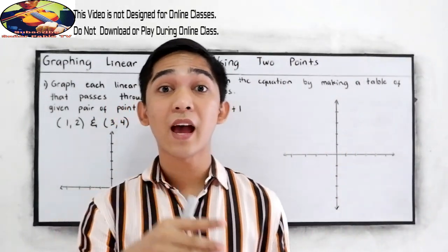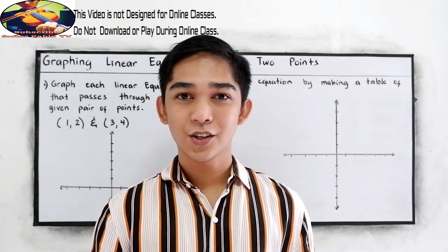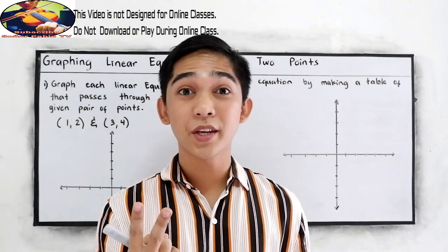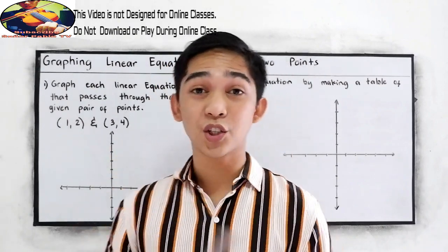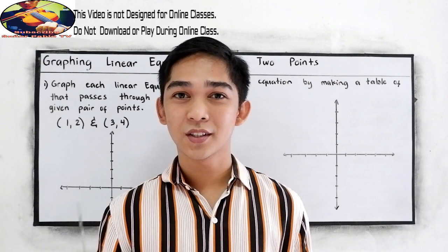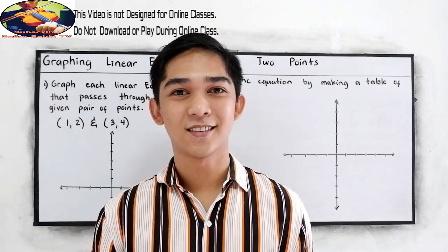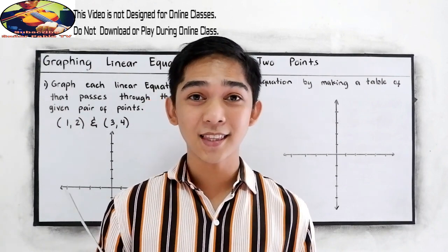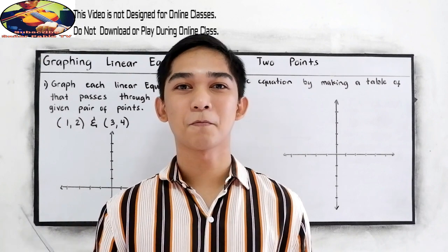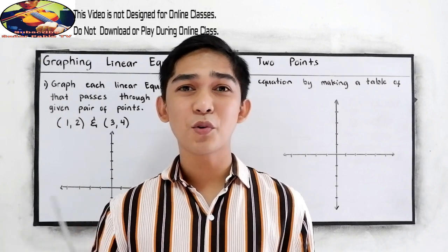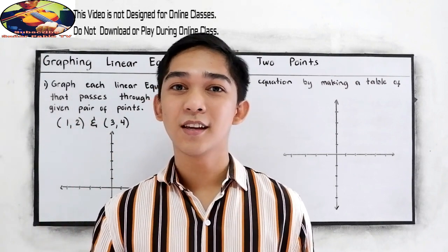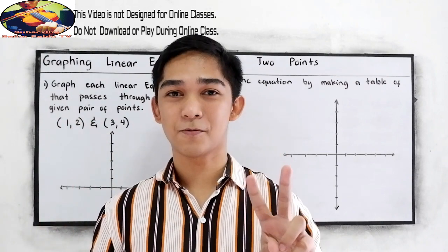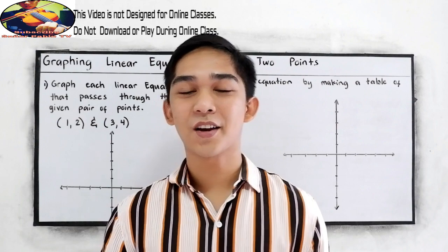In your grade 7 geometry, we discussed that two points determine a line. And in our linear equation, our graph is a line. So we're going to apply that as our integration. So how are we going to graph in our Cartesian plane given the two points?